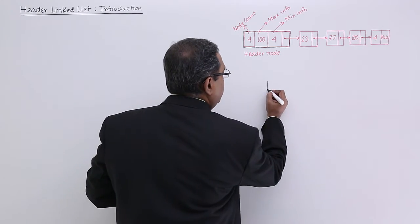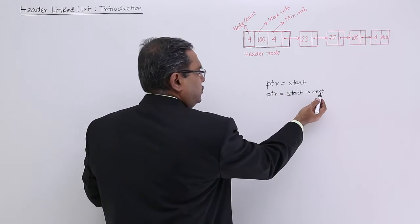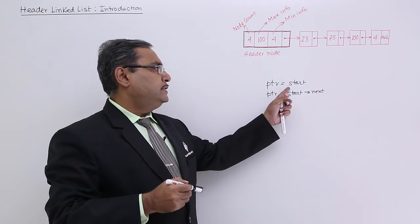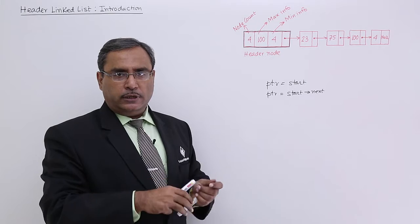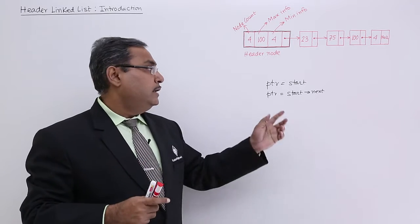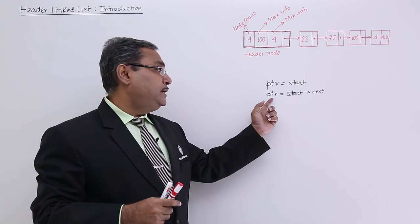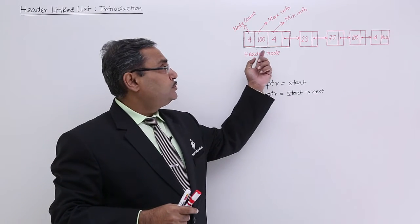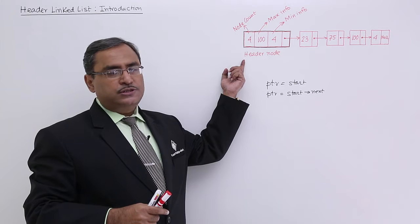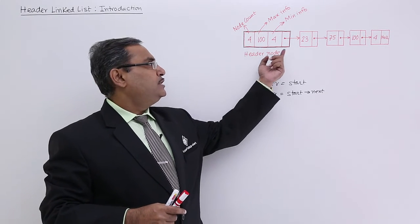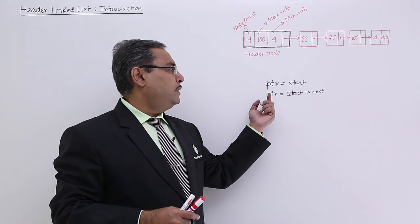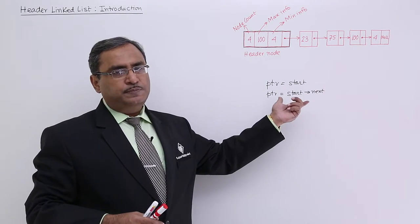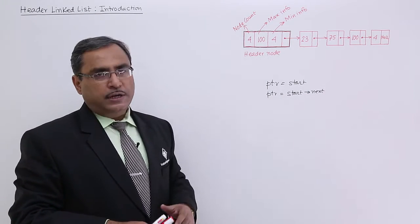In previous algorithms, we wrote PTR = start and then proceeded with the loop body. But here we must write PTR = start->next because the first ordinary node is not at the first position - it's from the second position onwards. So PTR = start->next replaces PTR = start.